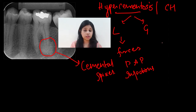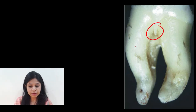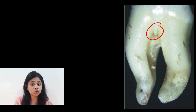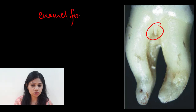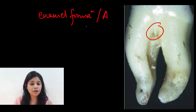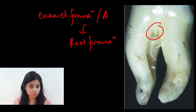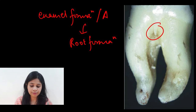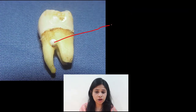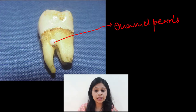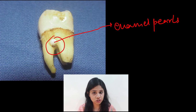Generalized hypercementosis is seen in certain systemic conditions such as Paget's disease. The second anomaly is enamel projections, most commonly seen in the furcation areas of mandibular teeth, occurring when amelogenesis does not cease before root formation begins — resulting in abnormal projections of enamel. In similar lines, enamel pearls are globule-like structures of enamel seen in the cervical regions of the tooth root.